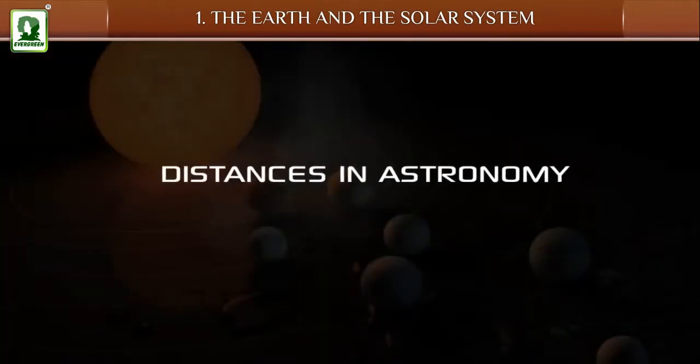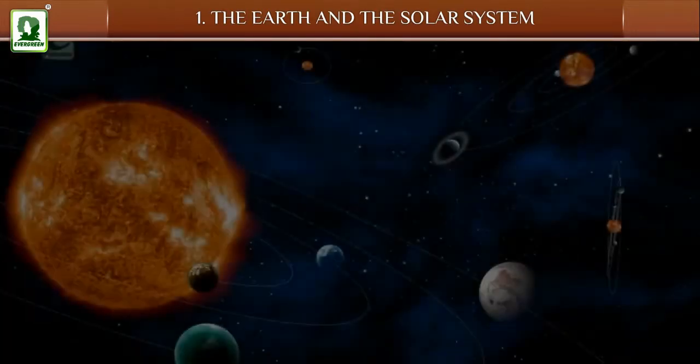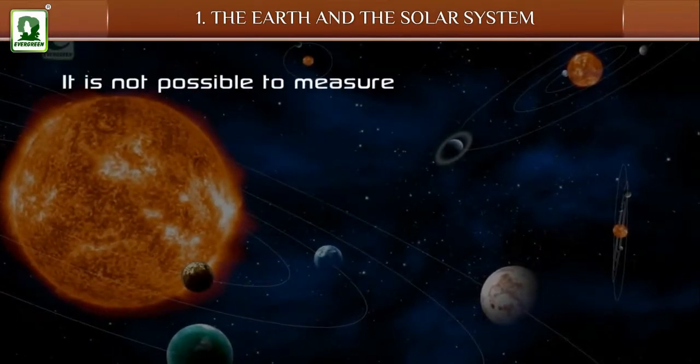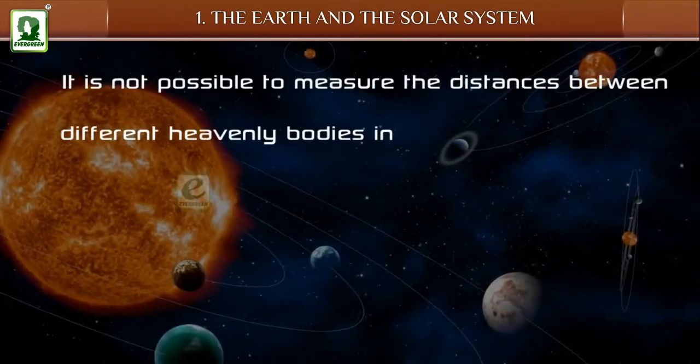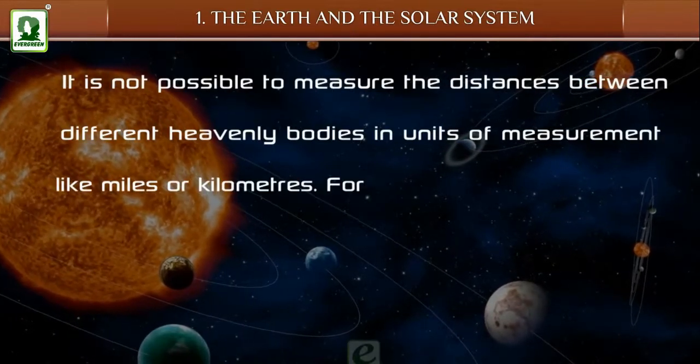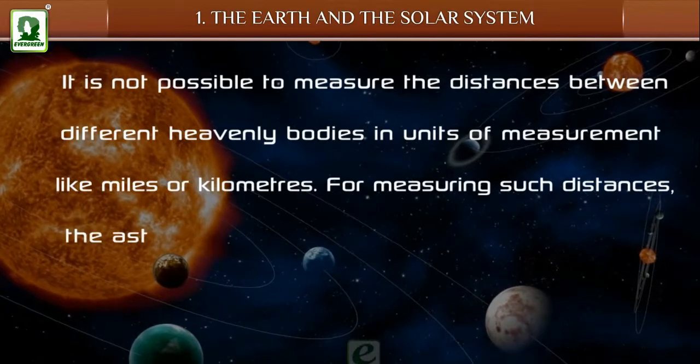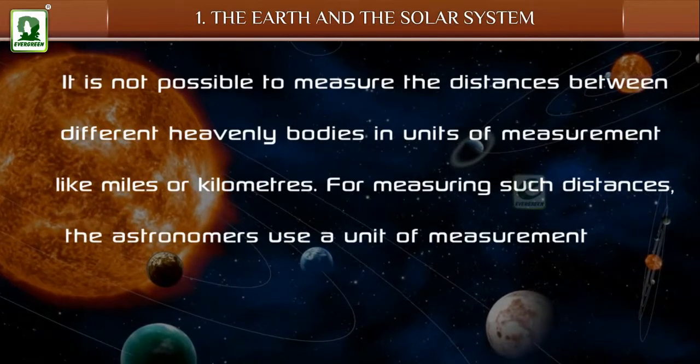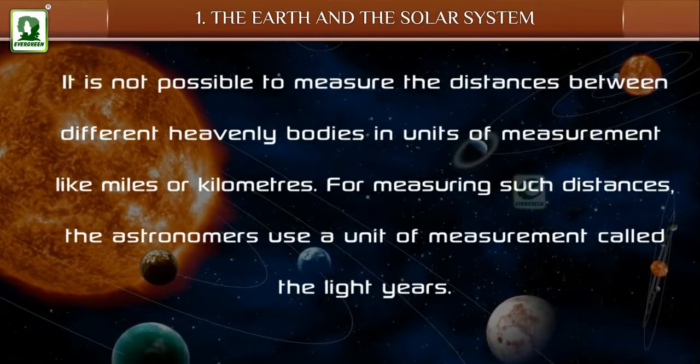Distances in Astronomy. It is not possible to measure the distances between different heavenly bodies in units of measurement like miles or kilometers. For measuring such distances, the astronomers use a unit of measurement called the Light Years.